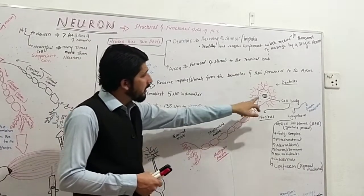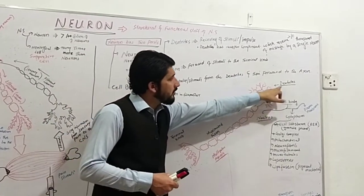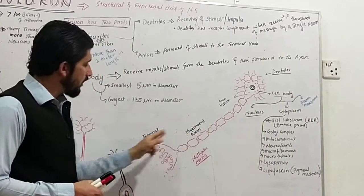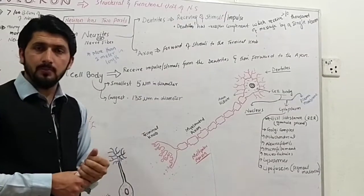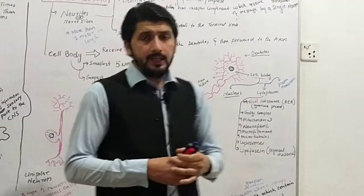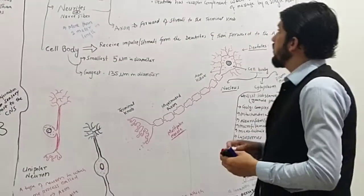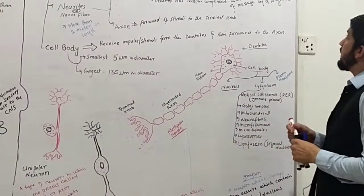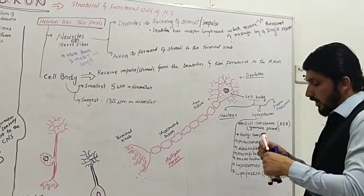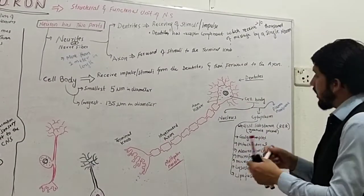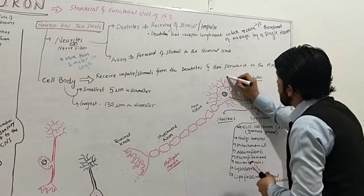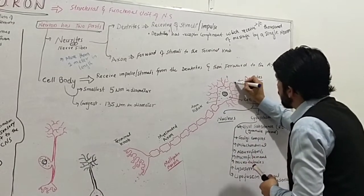In this typical diagram of a neuron, we can identify the dendrites, the cell body, the axons, and the terminal lobe.